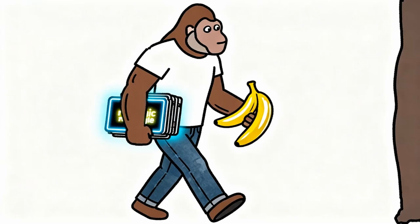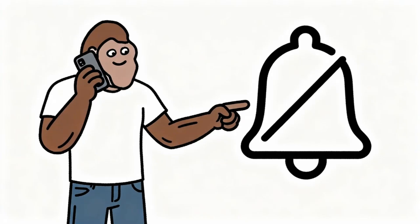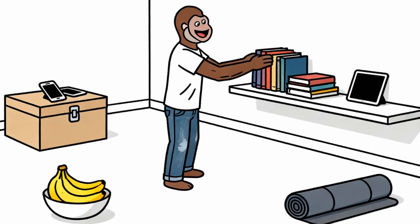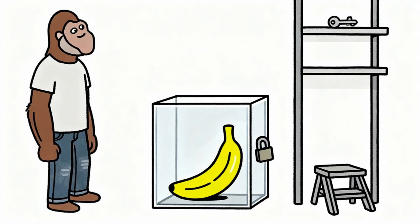Fourth strategy involves redesigning environment to support natural dopamine patterns. Monkey removes tempting artificial banana sources from immediate surroundings. Magic rectangles go in different room during focused work time. Notification sounds get turned off completely. Apps designed to capture attention get deleted or hidden. Monkey replaces artificial stimulation with environmental cues that promote natural behaviors. Books become easily accessible while entertainment devices require extra steps to use. Healthy food stays visible while processed snacks get stored out of sight. Exercise equipment gets placed where monkey will see it regularly. Creating friction between monkey and artificial dopamine sources gives brain time to make conscious choices. When accessing artificial banana requires multiple deliberate steps, monkey often chooses different activity that provides more genuine satisfaction.